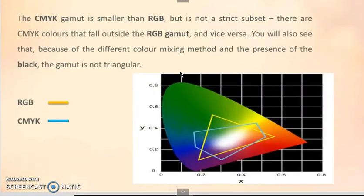The CMYK gamut is smaller than RGB, but there is no strict subset. There are CMYK colors that fall outside the RGB gamut and vice versa. You will also see that because of the different color mixing method and the presence of black, the gamut is not triangular.